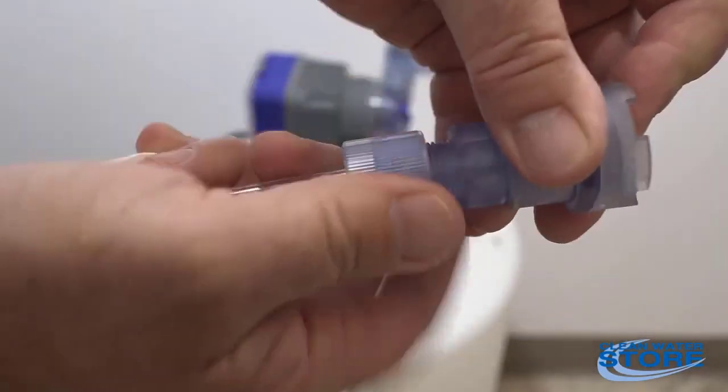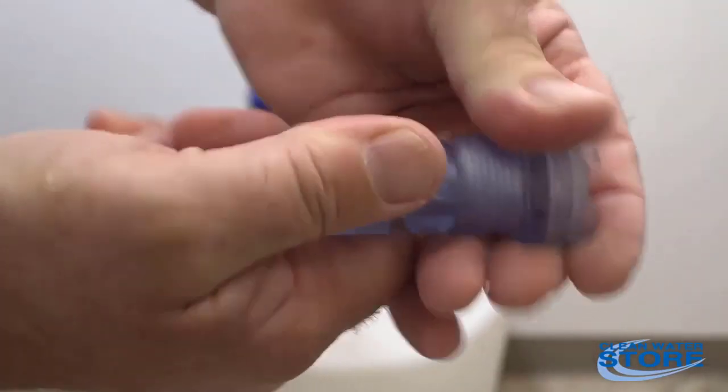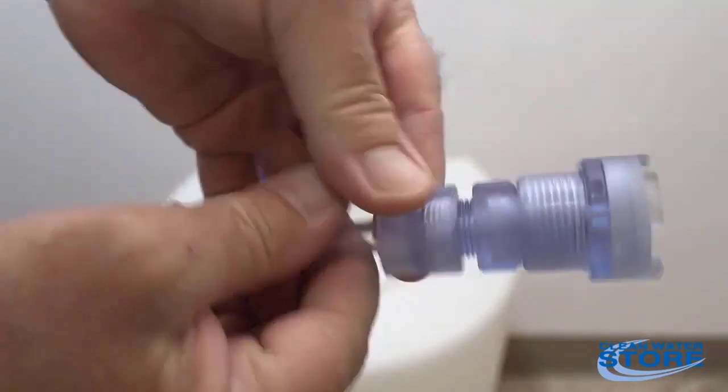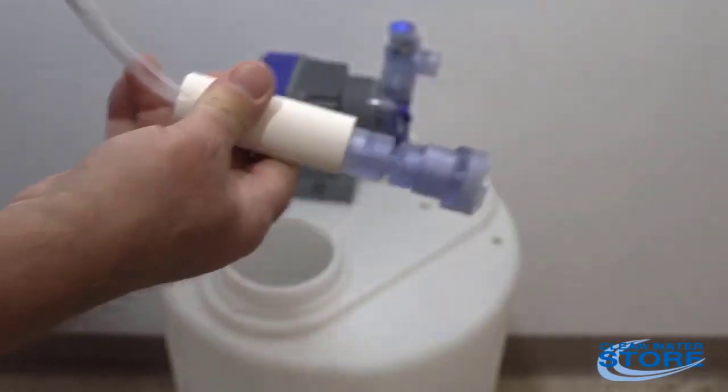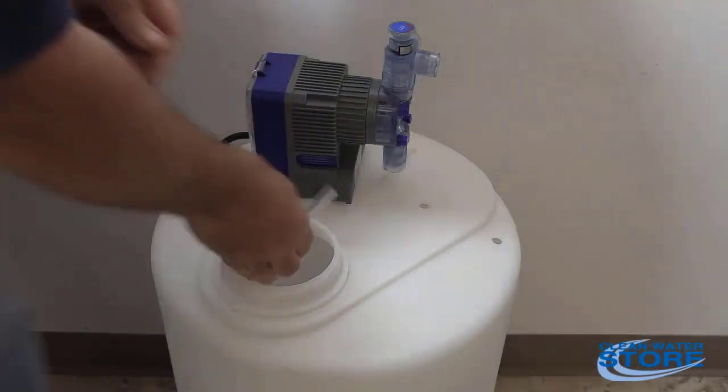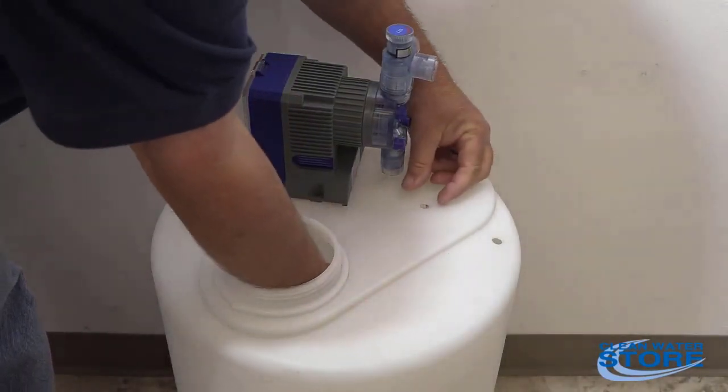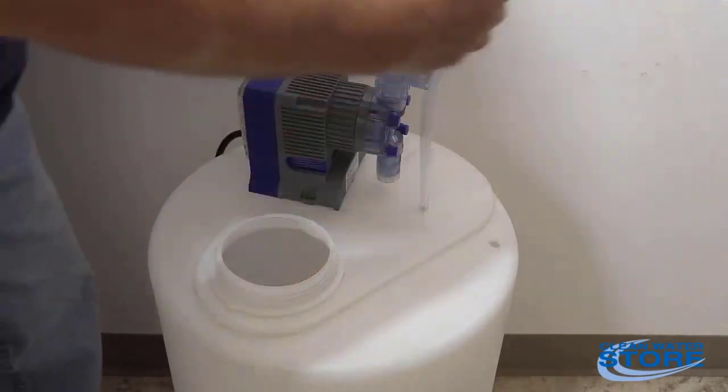Once you have that up in there, go ahead and hand tighten this fitting. It does not require any kind of thread tape or thread lube on this fitting. It's just hand tight, and get it good and tight on there. So now you have your weight with your foot valve, and we're going to drop this down in and bring it up through our hole.